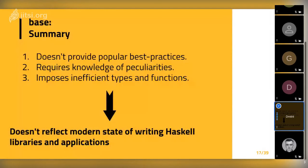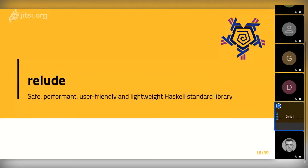To summarize all the issues with base: the standard library doesn't provide popular best practices, requires knowledge of peculiarities to write safe code, and by default imposes inefficient types and functions. This means it doesn't really reflect the modern state of writing Haskell libraries and applications. When you write modern Haskell, you use a really small subset of base and mostly rely on external libraries. It would be nice if all of these things were included in base.